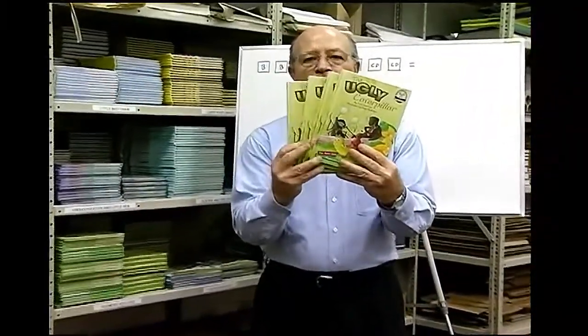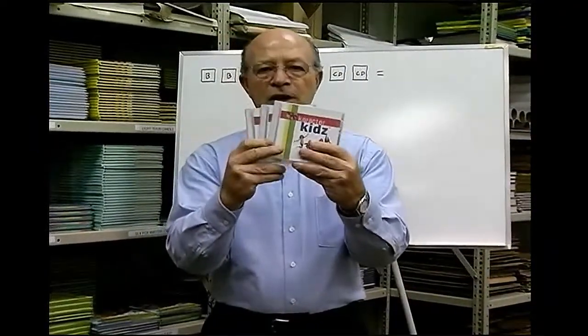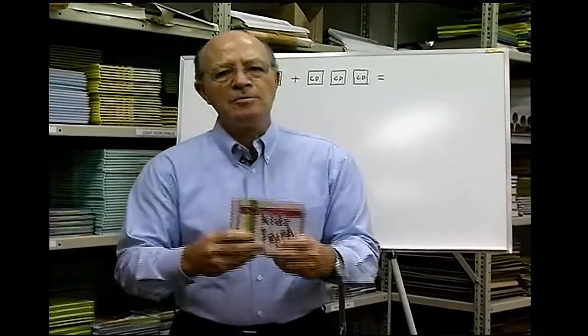If we get an order of four books, one, two, three, four, and an order of three CDs, one, two, three, how many items have we sold?